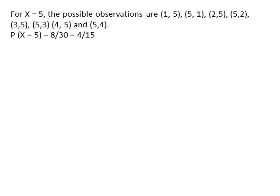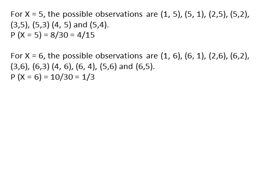For x=5, the possible observations are (1,5), (5,1), (2,5), (5,2), (3,5), (5,3), (4,5), and (5,4). So, probability of x=5 equals 8 by 30 equals 4 by 15.